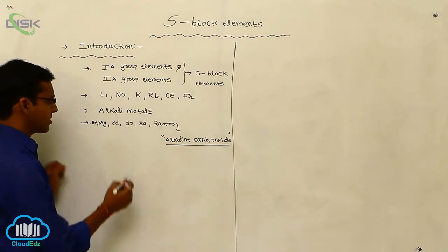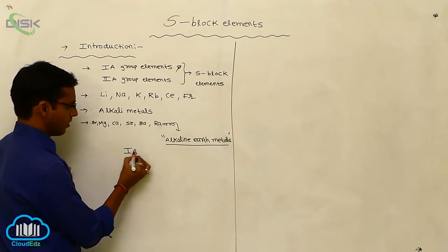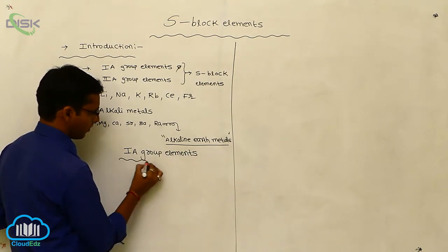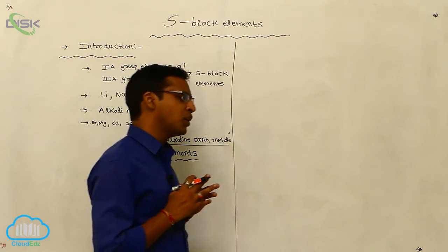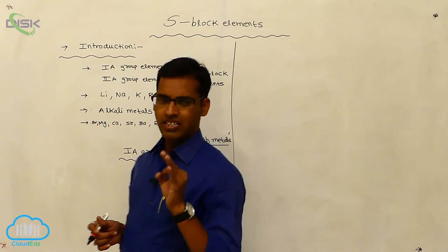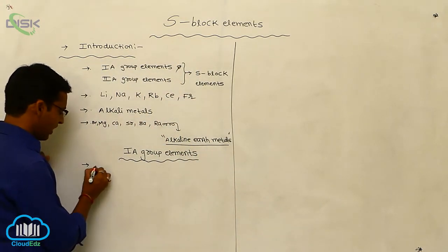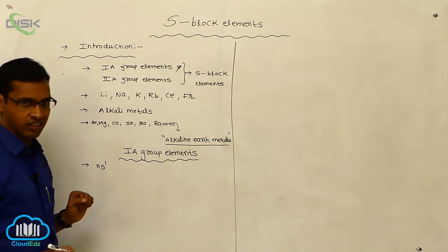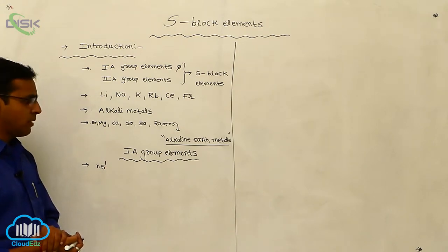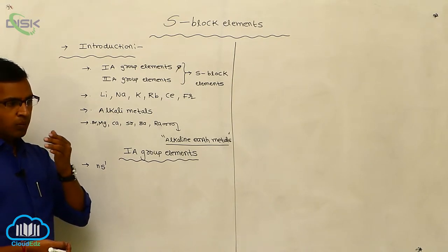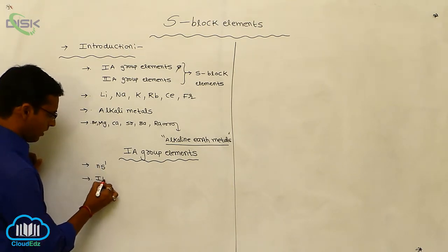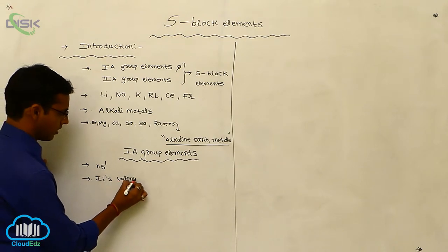In this chapter, we first discuss first A-group elements. The differentiating electron enters into the outermost shell containing only one electron, entering into NS1, and is called a first A-group element. The outermost shell contains only one electron, so its valence is one.